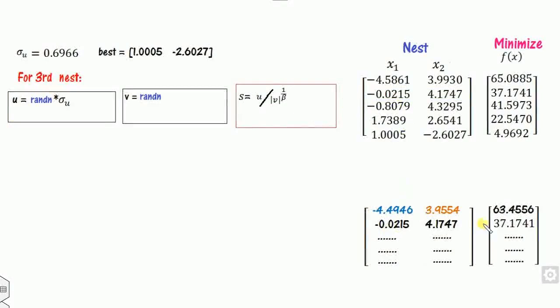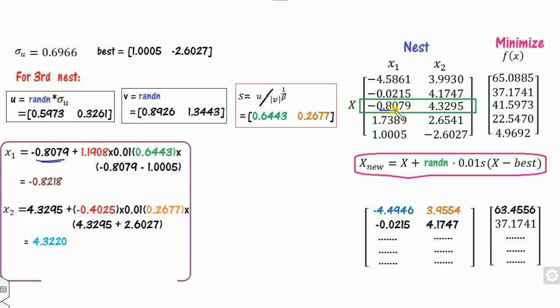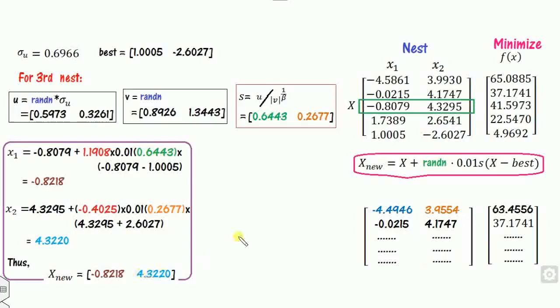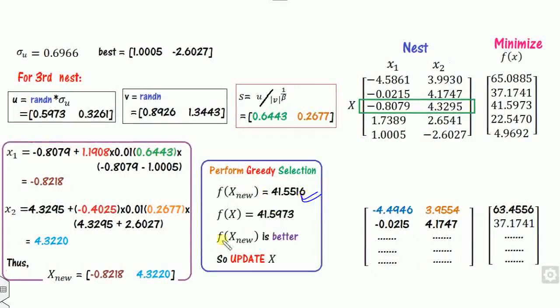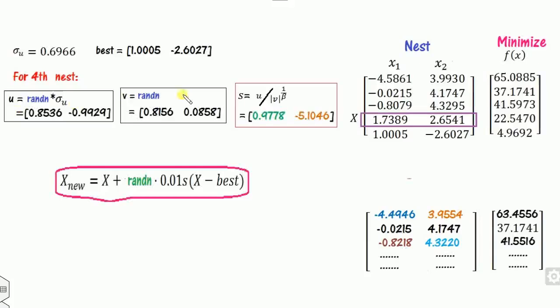For the third nest, u, v, and s are calculated again with fresh random numbers. The new x1 and x2 positions are computed and both lie within [-5, 5]. Greedy selection is applied: the fitness of x_new is compared to the original. Since x_new is better, we update the solution — deleting the previous value and substituting the new one, for example x1 updates to -0.8218.